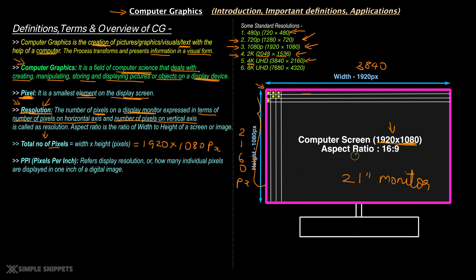For the same physical size of computer screen — say a 21-inch monitor — a 4K screen will have more pixels, giving rise to a higher PPI value. So what is pixel per inch? Pixel per inch (PPI) refers to display resolution — how many individual pixels are displayed in one inch of a digital image. This definition is not very straightforward to understand just by reading it, so let's work through some formulas and examples.